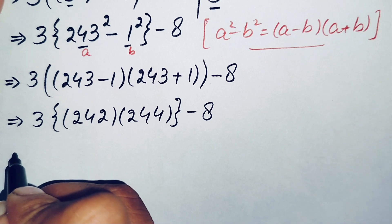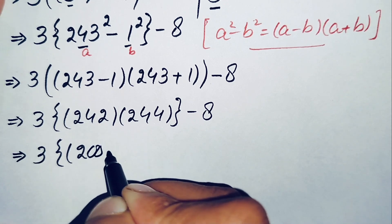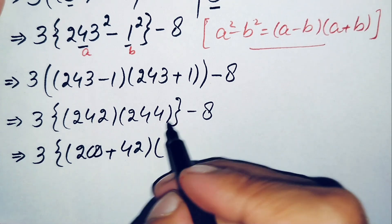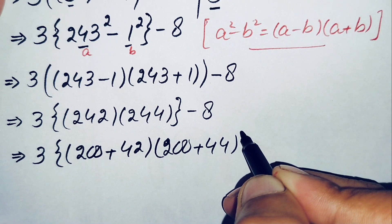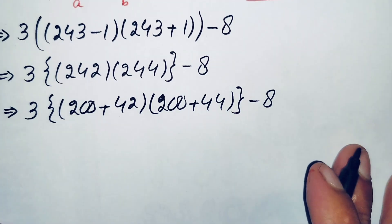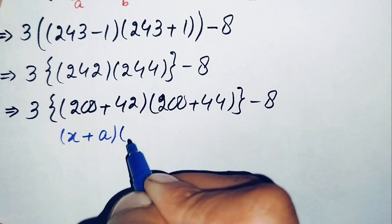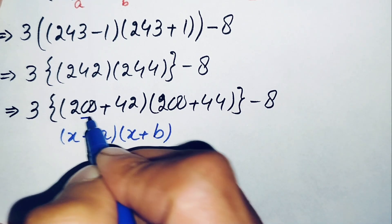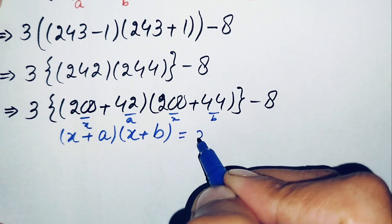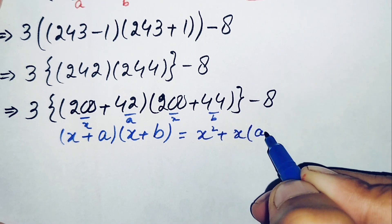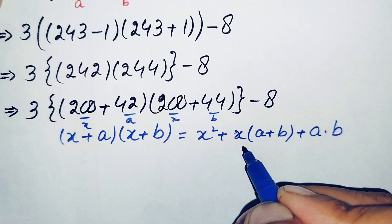Next we will change 242 and 244 to the sum of 200 plus 42 and 200 plus 44, whose multiplication is very simple. These two numbers inside the braces are in the form of (x+a)(x+b), which equals x² + x(a+b) + ab.